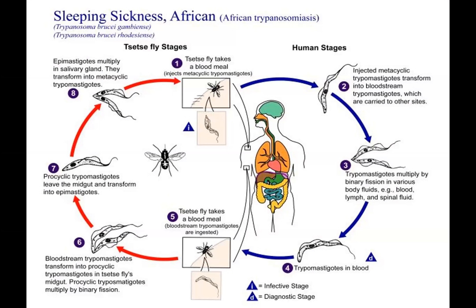Here are our two sleeping sicknesses — trypanosoma brucei gambiense and trypanosoma brucei rhodesiense. The tsetse fly takes a blood meal, picks up the infective stage. Once it gets into the human, the injected metacyclic trypomastigote transforms into the bloodstream trypomastigote, which is carried to other sites, multiplying by binary fission in body fluids — even spinal fluid. The diagnostic stage is the trypomastigote in the blood. The tsetse fly bites again, takes it up in a blood meal, it transforms through procyclic and epimastigote stages, and the trypomastigote is injected again through the saliva.